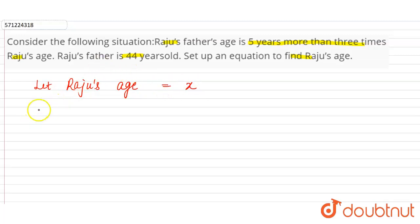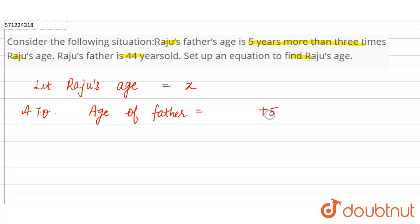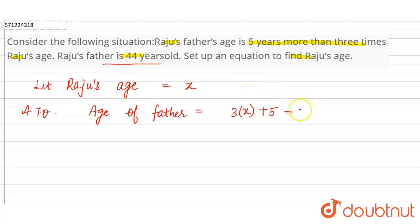Now, according to the question, the equation will be: Raju's father's age, that is age of father, will be equal to 5 years more — so plus 5 — more than 3 times Raju's age. Raju's age is x, so 3 times Raju's age is 3x. The age of Raju's father is given as 44. So, 3x plus 5 is equal to 44. This is the required equation.